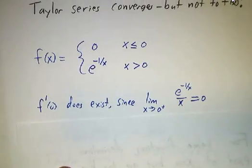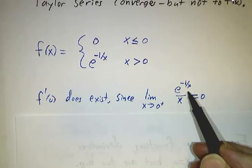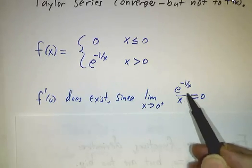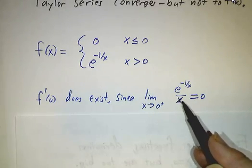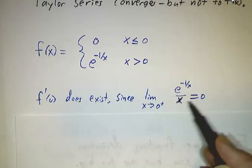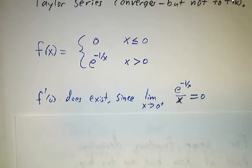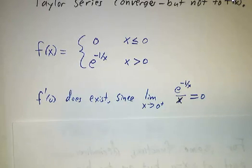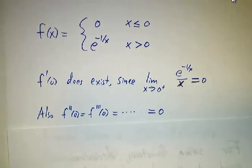And if you examine the way that it approaches the origin, you discover that f prime, that it is differentiable at x equals 0. You have to take the limit of f of x minus f of 0 divided by x from both sides, and on the left it's easy, and on the right you have to take this limit. And you do this limit using L'Hospital's rule, and you do some manipulations, and you discover that the limit is 0. And then if you do the same kind of analysis, you discover that the second derivative also exists and is also 0. The third derivative exists and is 0.